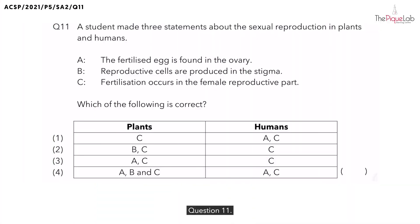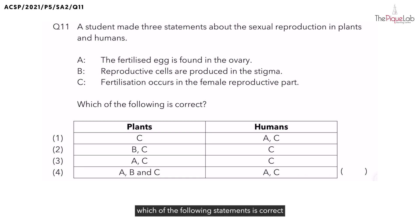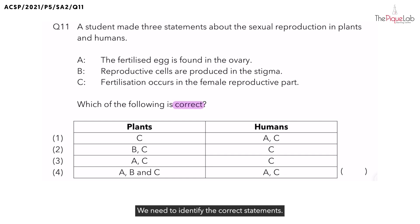Question 11. A student made three statements about sexual reproduction in plants and humans, and this question is asking which of the following statements is correct for plants and humans respectively. Let me highlight the word 'correct' — we need to identify the correct statements.